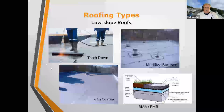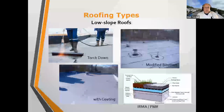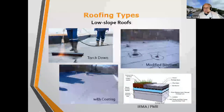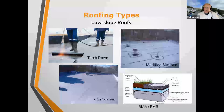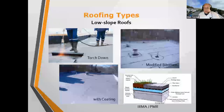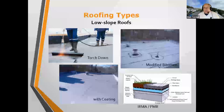Here are some examples of torch-down application. If you go up on a flat roof, there's an easy way to determine whether you have a single-ply membrane or a BUR membrane. If you see seam lines approximately three feet apart, you're likely looking at modified bitumen — it comes in rolls of approximately 39 inches. If the seams are further apart, six to ten feet, you most likely have one of the other single-ply membranes.